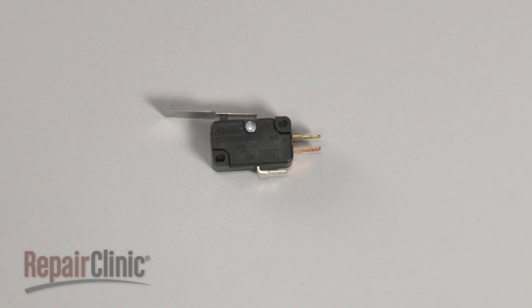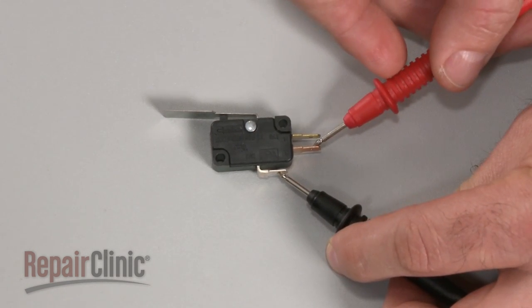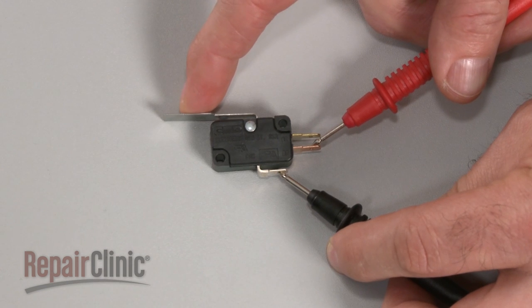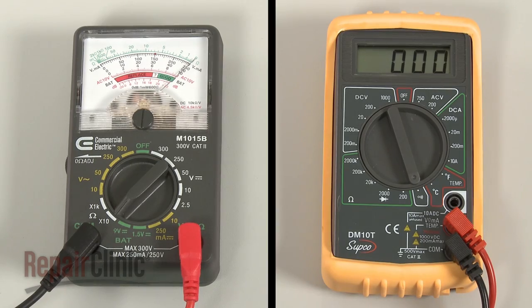To test the switch, use a probe to touch the common terminal and the second probe to touch the normally open terminal. Now actuate the switch. If the meter reading shows zero ohms of resistance, the switch has continuity.